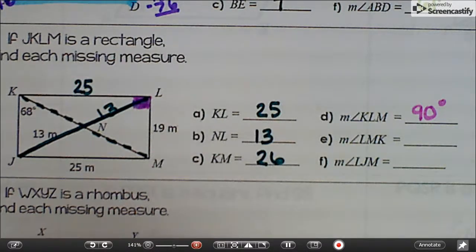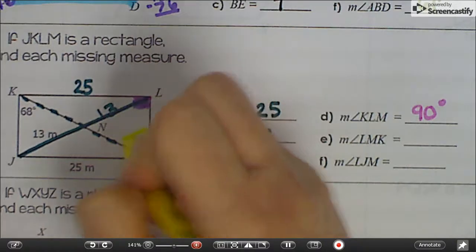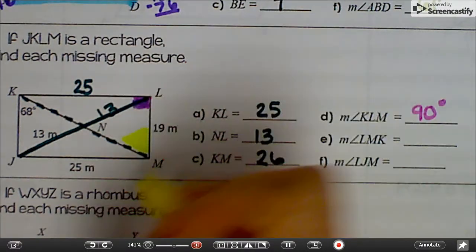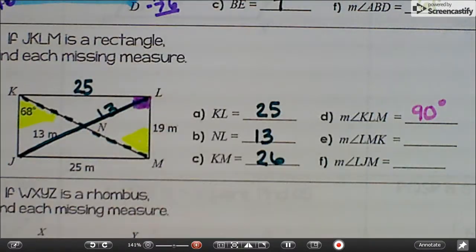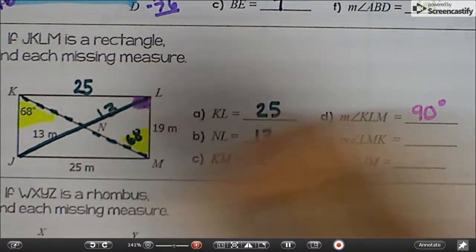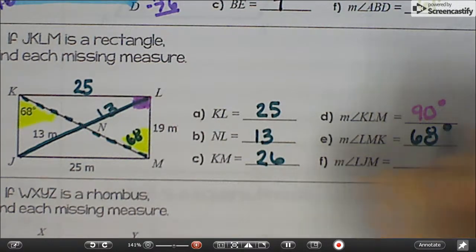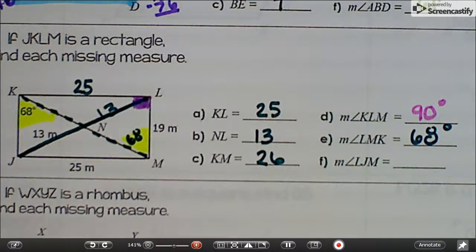LMK is right here. And that would be alternate interior angles with 68. So that's 68.